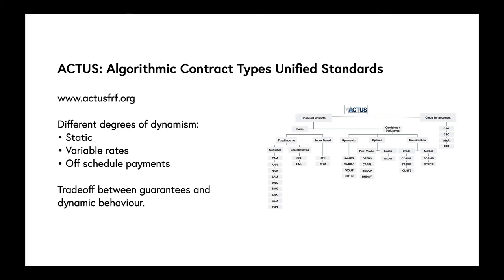ACTUS also allows for people to make payments off schedule. And that will require recalculation of contract terms. The more variability that is offered, the fewer guarantees that can be given about the behavior of a contract.